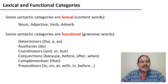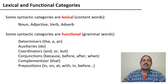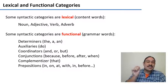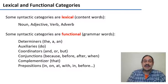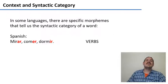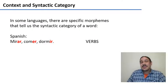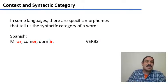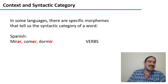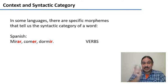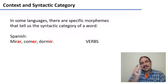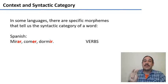You might have noticed that the word 'before' occurs more than once in our list. This is because words can have different syntactic categories depending on what they're doing in a specific sentence. Sometimes morphology can help you identify the syntactic category of a word. For example, in Spanish, infinitive verbs always end in these suffixes — ar, er, ir — as in 'mirar,' 'comer,' 'dormir,' meaning 'to see,' 'to eat,' and 'to sleep.' If you have that suffix, you're almost certainly looking at a verb.